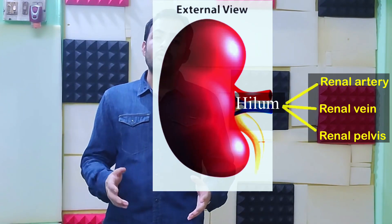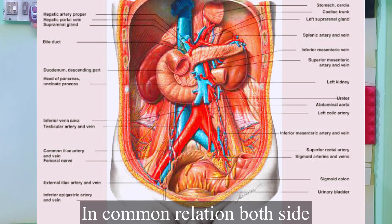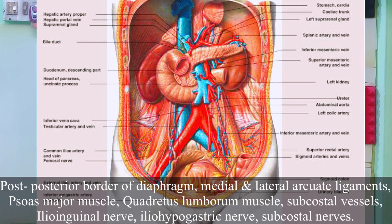Now I'll talk about the relations of the kidney. The common relations: superiorly you find the suprarenal gland; immediately you find the pelvis and its continuation as the ureter, as well as the renal artery and renal vein. Behind the kidney you find the posterior border of the diaphragm, medial and lateral arcuate ligaments, psoas major muscle, quadratus lumborum muscle, subcostal vessels, iliohypogastric nerve, ilioinguinal nerve, and subcostal nerve — all on both sides.